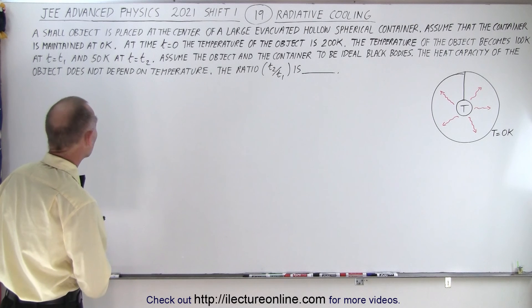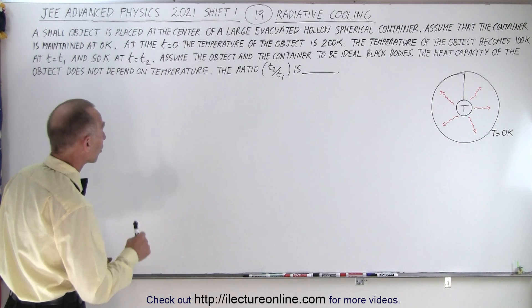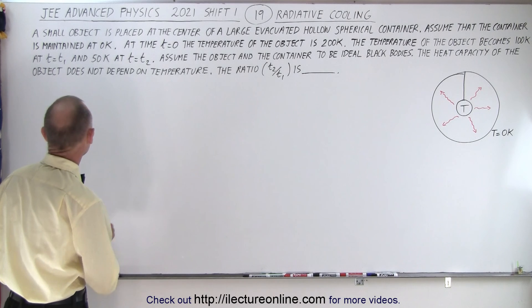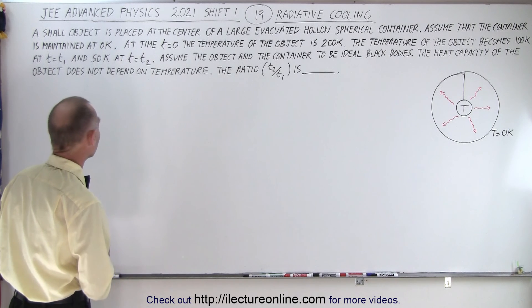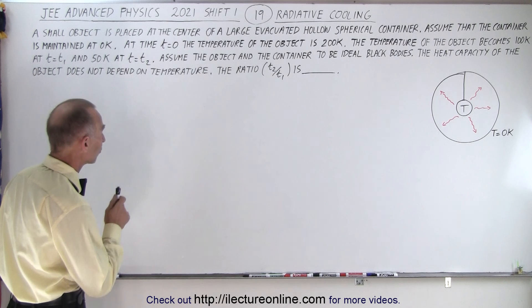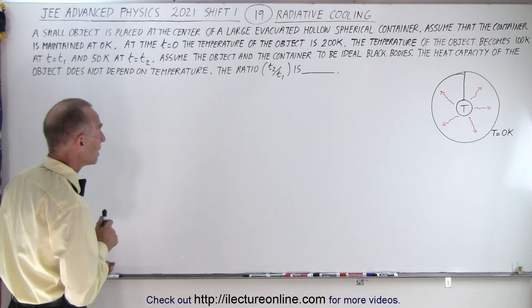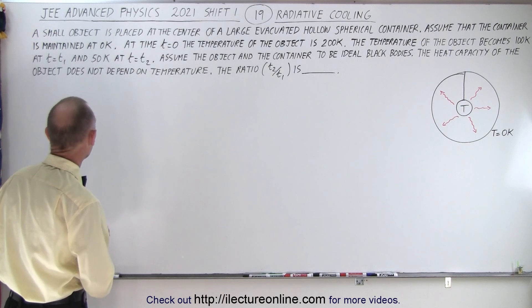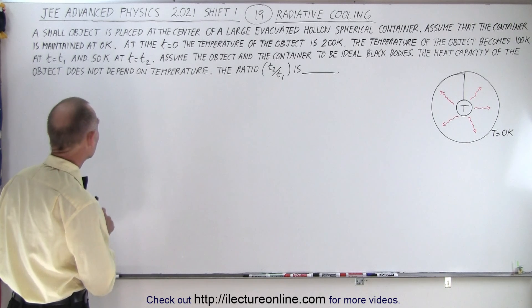Let's read the problem. A small object is placed at the center of a large evacuated hollow spherical container. The container is maintained at 0 Kelvin. At time t=0, the temperature of the object is 200K. The temperature becomes 100K at t=t₁ and 50K at t=t₂.